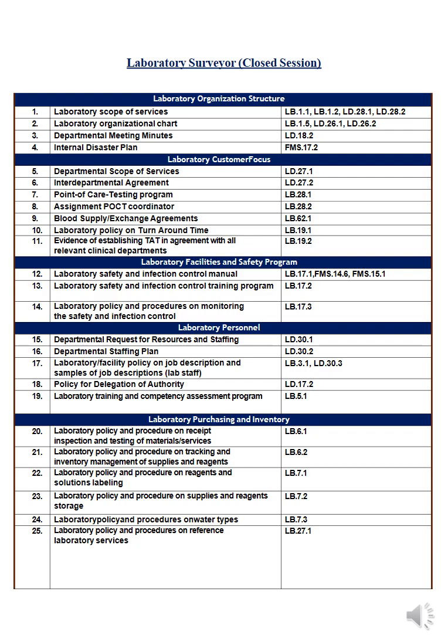The internal disaster plan could be a separate, smaller document derived from the general hospital internal disaster plan. It should be prepared by FMS security and safety personnel plus the lab's internal safety coordinator. Number five is the departmental scope of service, as discussed. Number six is the interdepartmental agreement — agreements between the lab and other departments, and between divisions or sections inside the lab, covering referral numbers and turnaround time.